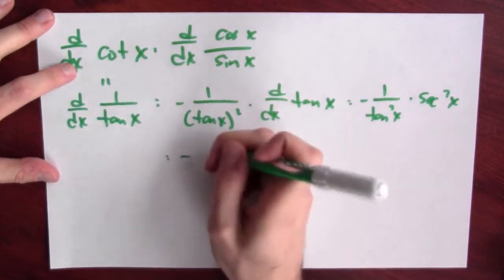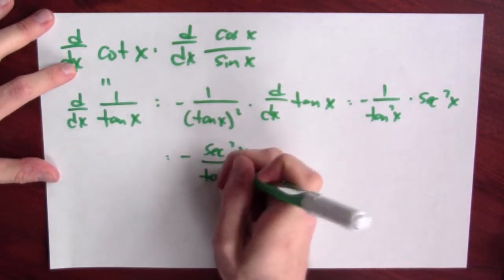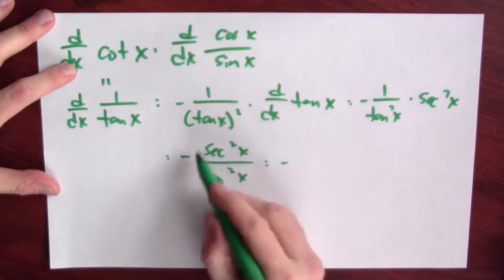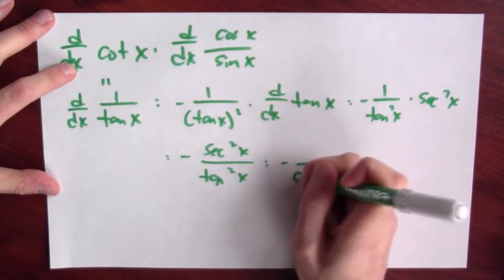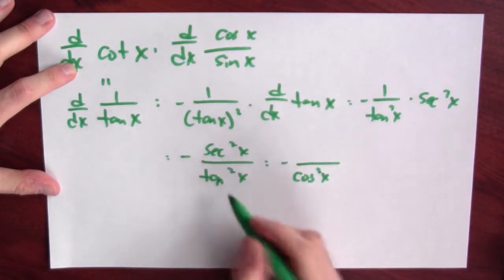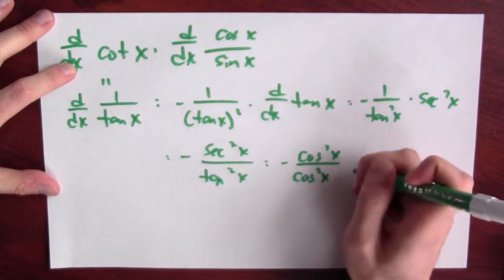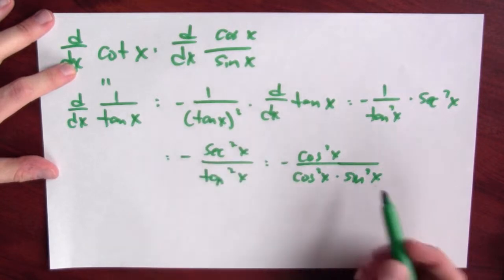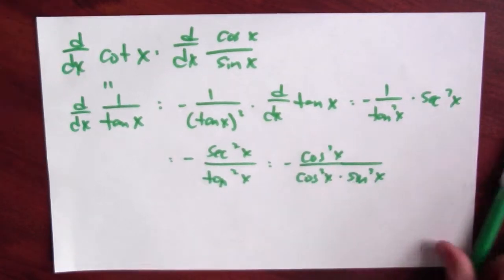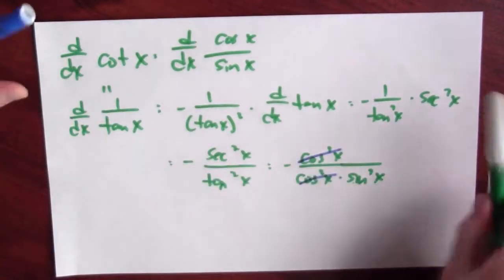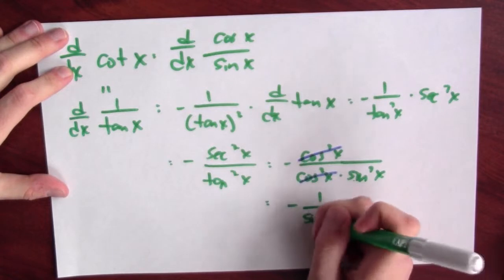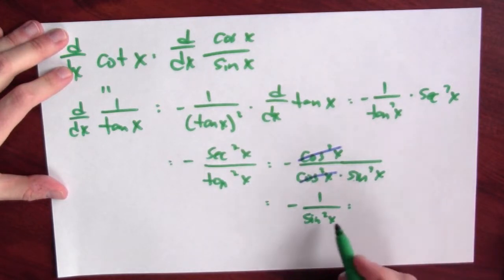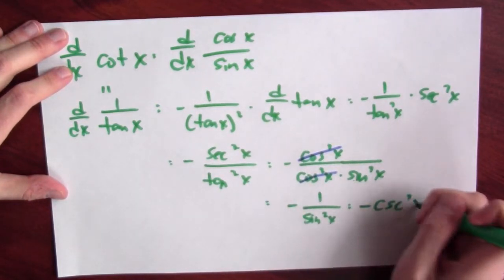The derivative of cotangent is -sec²(x)/tan²(x), but this can be simplified. Having sec²(x) in the numerator is the same as having cos²(x) in the denominator, and tan²(x) in the denominator contributes cos²(x) in the numerator and sin²(x) in the denominator. So -sec²/tan² simplifies to -cos²/( cos²·sin²), and the cosines cancel, leaving -1/sin²(x), which is -csc²(x).